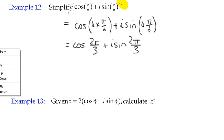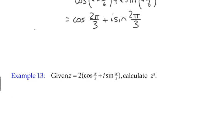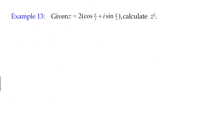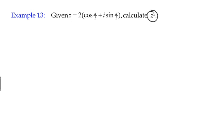Okay, example 13 takes us on to one where there is a modulus value greater than one. So given z is two times cos π/3 plus i sine π/3, calculate z to the power five.